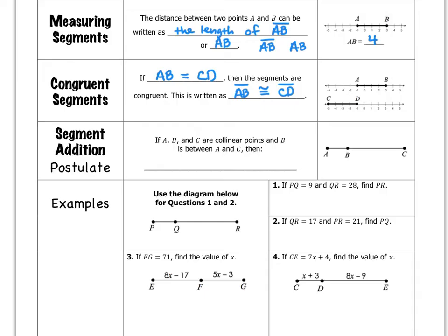The Segment Addition Postulate says the following: if A, B, and C are collinear points — meaning they're all on the same line — and B is between A and C, which you can see from this figure, then the following must be true: the length of segment AB plus the length of segment BC is equal to the length of segment AC. All it's saying is that this length from A to B, plus this length from B to C, equals the full length from A to C. The smaller segment plus the other segment equals the whole thing.